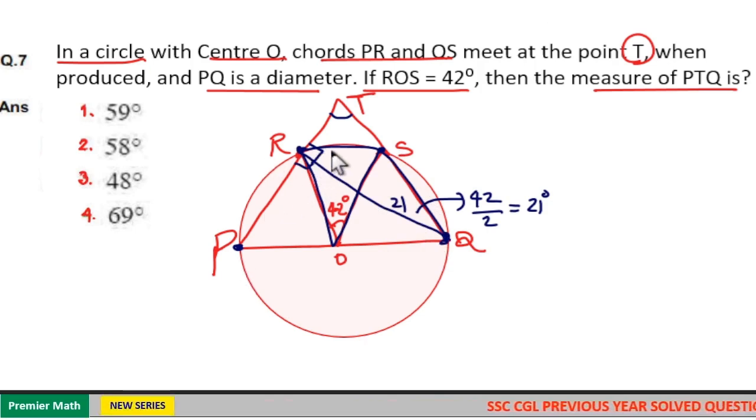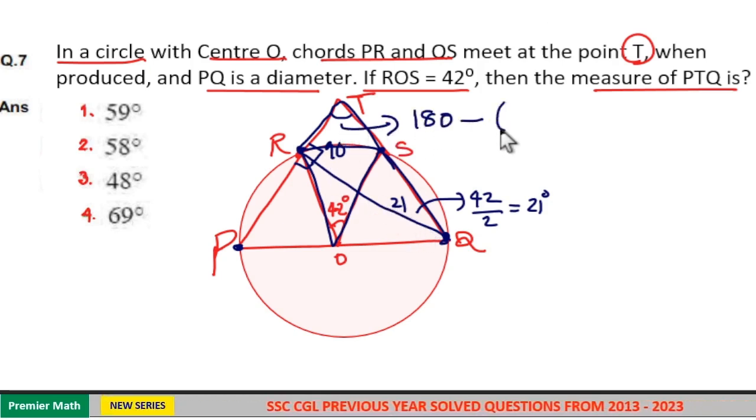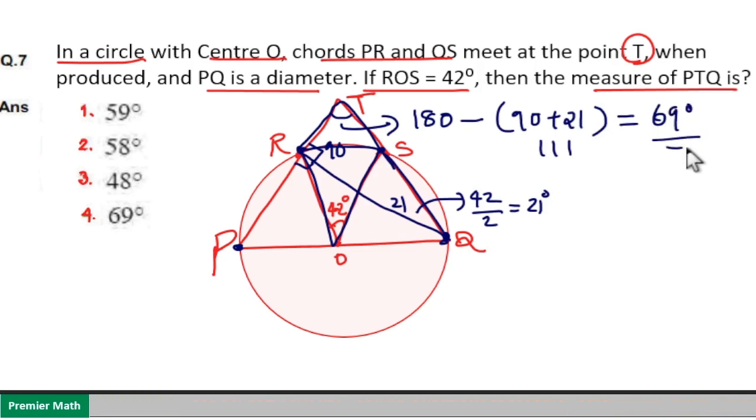Now you can see this is 90 degrees. If you take this triangle, this is 90, this is 21. So this angle is 180 minus (90 plus 21). 90 plus 21 is 111, so 180 minus 111 equals 69 degrees.